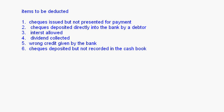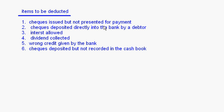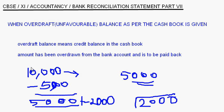These are the items to be added and deducted in case of an unfavorable balance as per the cash book. For each transaction you should understand its effect and then decide whether it is to be added or deducted. Any money credited into the bank reduces the overdraft balance, and any money debited by the bank increases the overdraft balance. In the next session I'll take up an example to illustrate this.